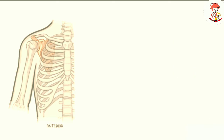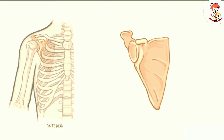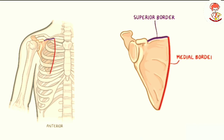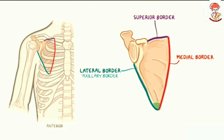Like any fine triangle, the scapula has three borders. The shortest and thinnest of them is the superior border. Then there is the medial border, which runs parallel to the vertebral column. Finally, there is the lateral border, which is the thicker one. The lateral border is also known as the axillary border because it points toward the axilla or armpit region. The point where the medial and lateral borders meet is the inferior angle, and we also have the superior angle, which is the junction of the superior and medial borders.